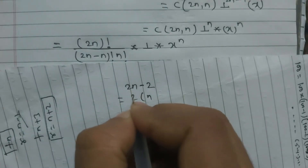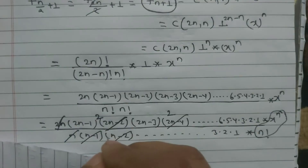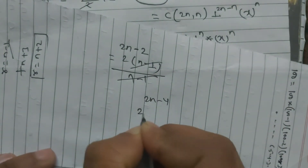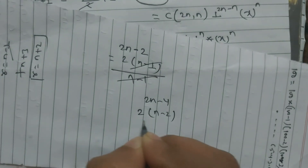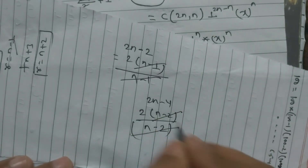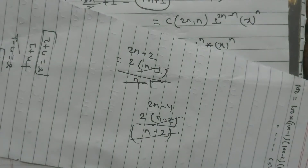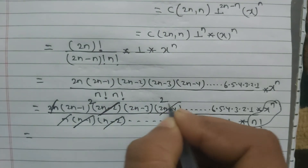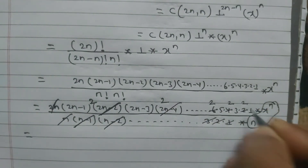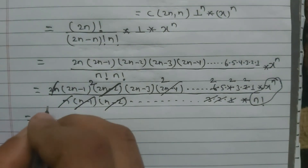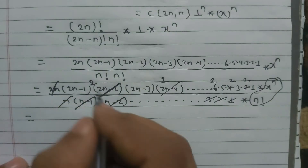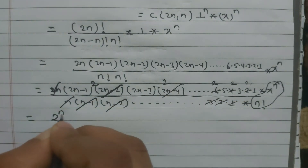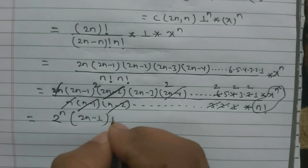From the even terms in (2n)!: (2n−2) = 2·(n−1), so it cancels with (n−1) in n!. Similarly, (2n−4) = 2·(n−2) cancels with (n−2), and so on — 6=2·3, 4=2·2, 2=2·1. Each even factor contributes a 2, giving 2^n overall. The remaining odd terms are 2n·(2n−1)·(2n−3)·...·3·1.